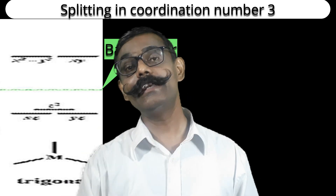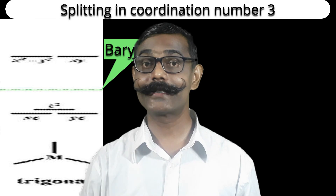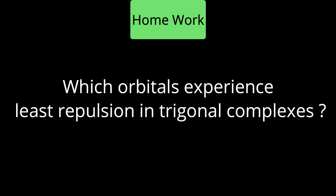Next we will discuss energy sequence for coordination number four — tetrahedral and square planar geometries. One clarification: when saying 'decrease in energy,' this is relative to the barycenter (spherically symmetric hypothetical field). Relative to free metal ion orbital energy, all orbitals are at higher energy due to repulsion. Where there is more repulsion, energy increases more; where less repulsion, energy increases less relative to barycenter, which we call a 'decrease' to maintain equilibrium.